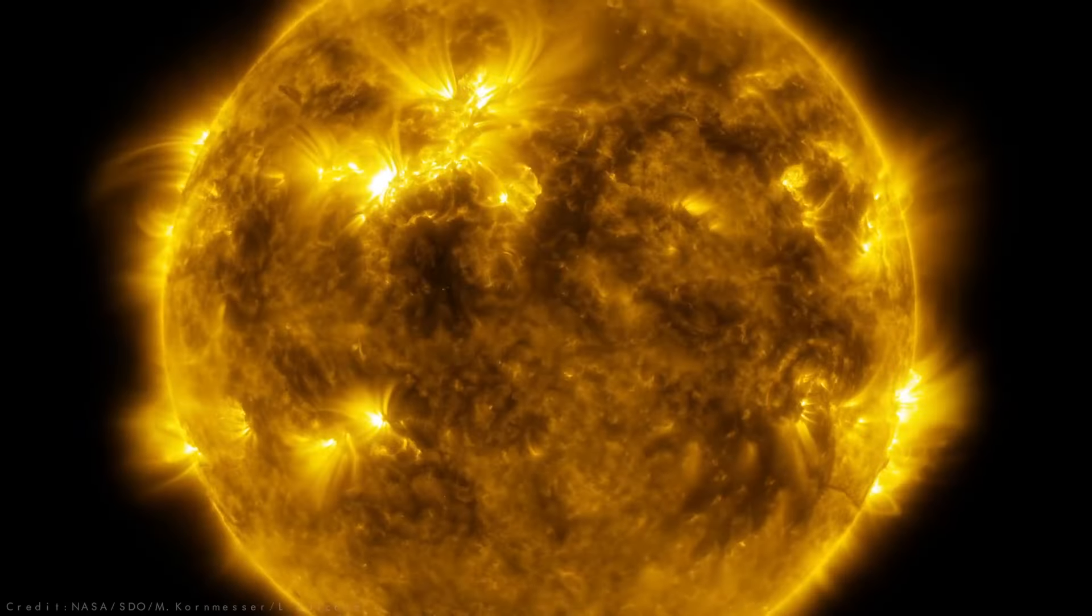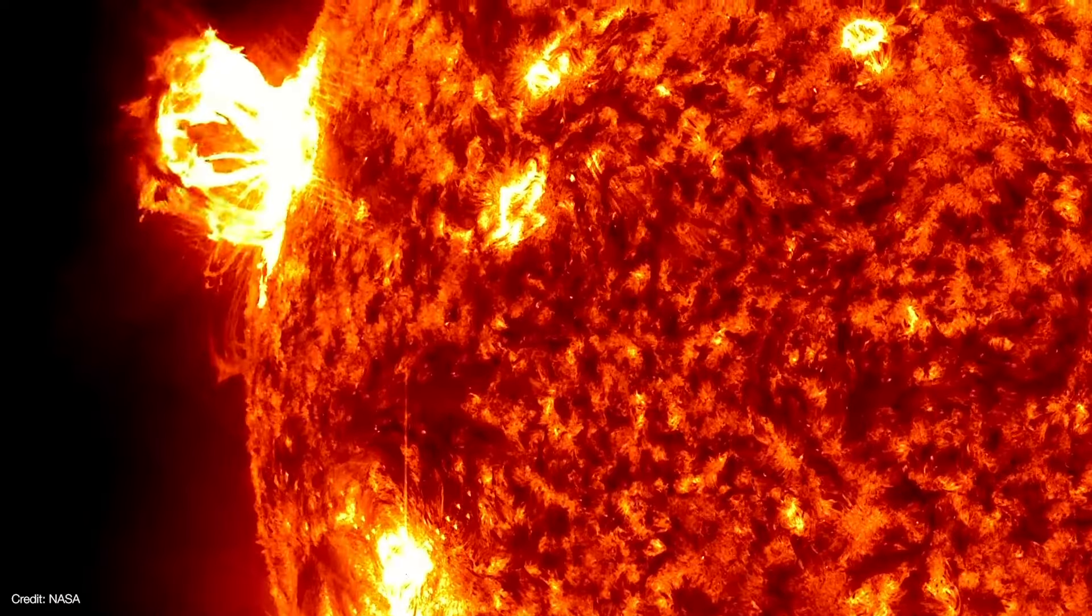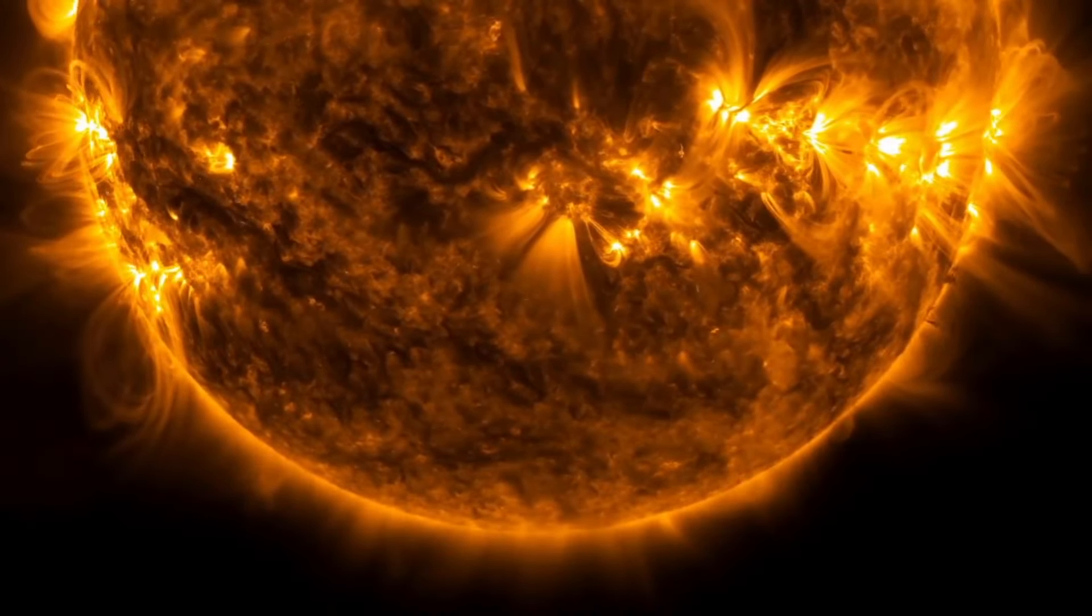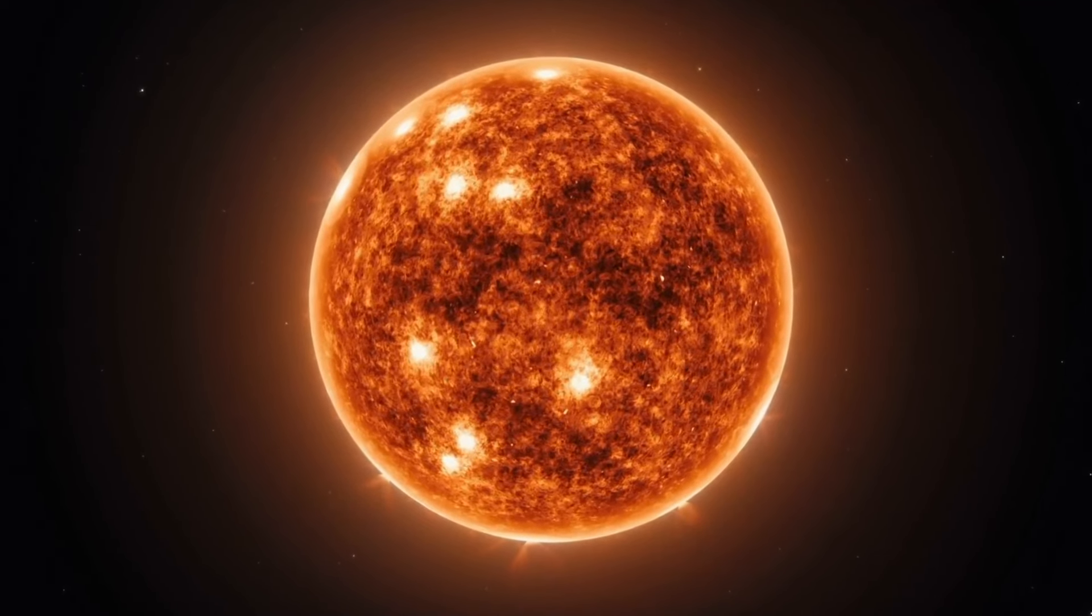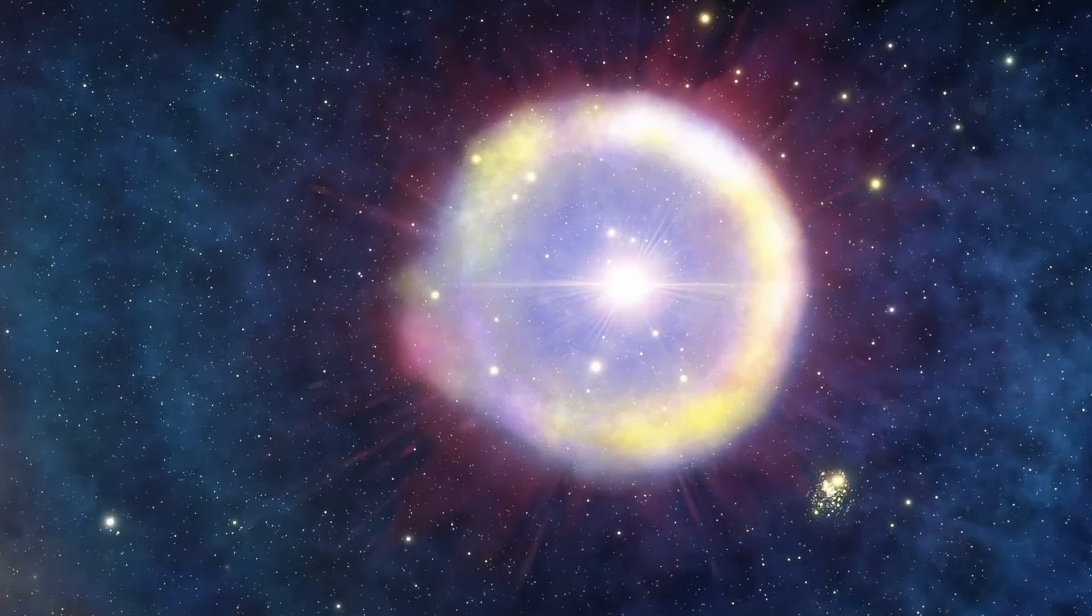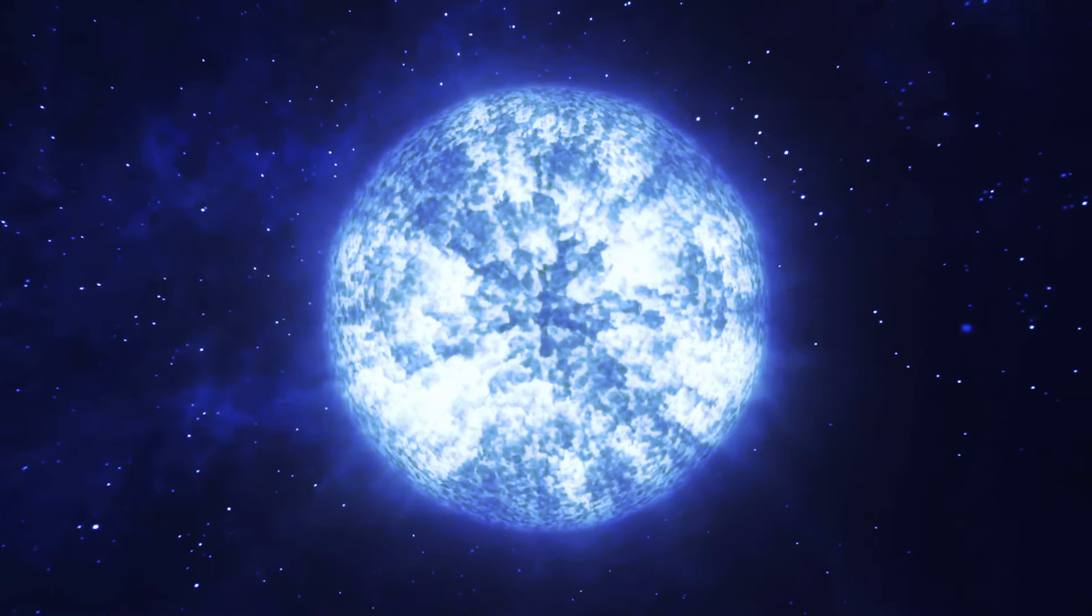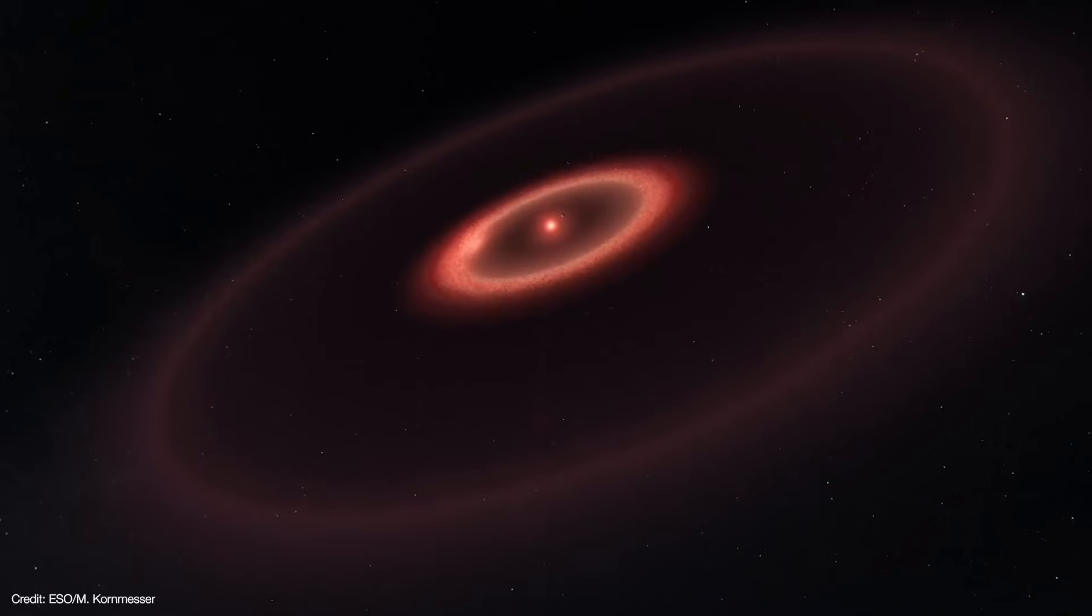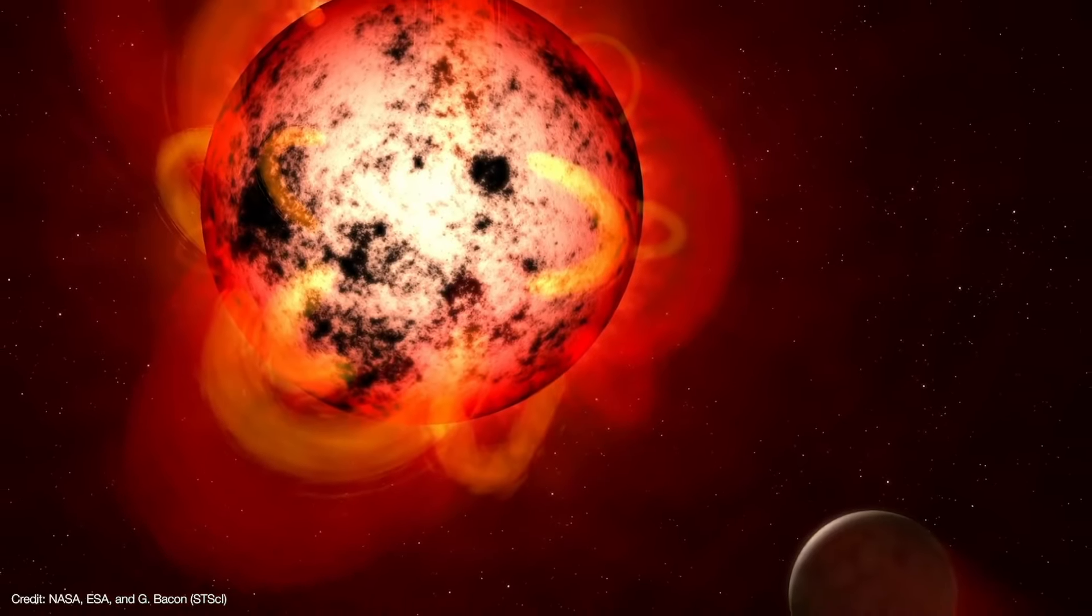For example, the Sun is a star of medium mass, with an upper age limit of about 10 billion years. It has existed for about 4.65 billion years, and has about 5.35 billion years to exist. The upper age limit of the heaviest stars, such as blue giants, is only a few million years, while the upper age limit of the smallest stars, such as red dwarfs, can be up to thousands of billions of years, even exceeding the age limit of the universe.